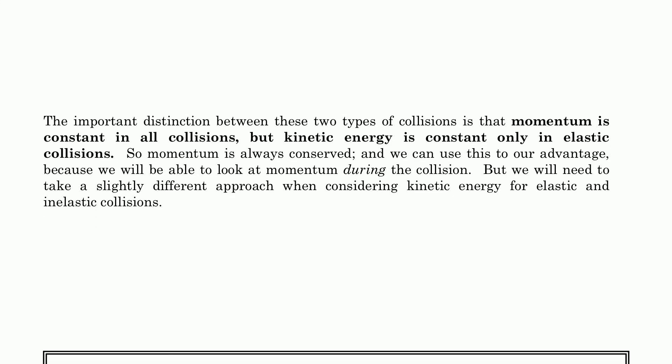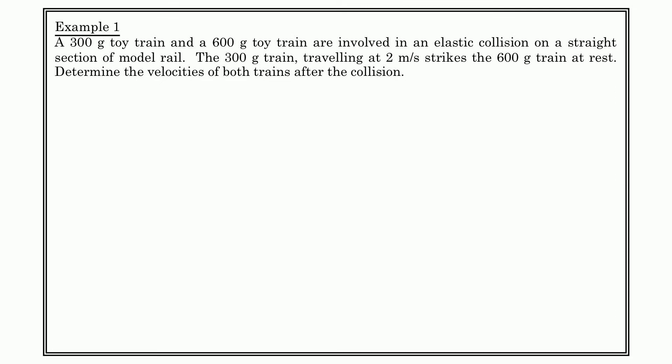Here is an example where we're going to have to use both. A 300-gram toy train and a 600-gram toy train are involved in an elastic collision on a straight section of model railway track. The 300-gram train is traveling at 2 meters per second and strikes the 600-gram train at rest. What's the velocity of both trains after the collision? We've got the 600-gram train sitting there, and the 300-gram train coming in — then bang, there's a collision. It gets very complex.